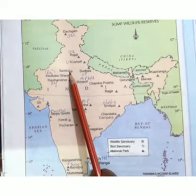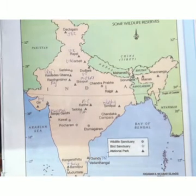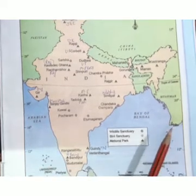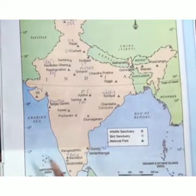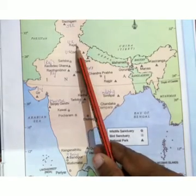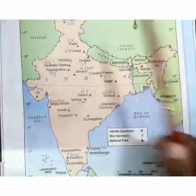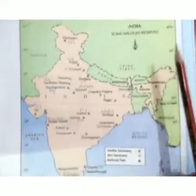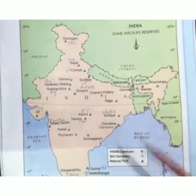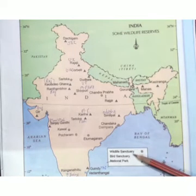Number two is Mudumalai in Tamil Nadu. Number three is in Uttarakhand, and number four is Dachigam in Jammu and Kashmir. These are the points you have to mark on the political map of India.